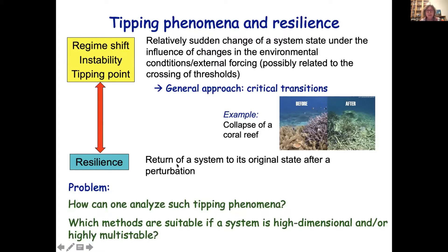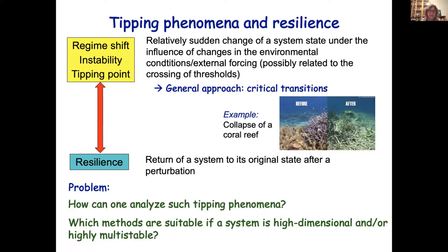The problem we are studying is how do we analyze such tipping phenomena, and what methods are in principle suitable for a system if it is high dimensional — as most systems in earth system science are — or highly multi-stable. Many works dealing with tipping phenomena and critical transitions assume that we have only two alternatives, but the general approach would consider many more than two stable states, and this could complicate things when studying critical transitions.